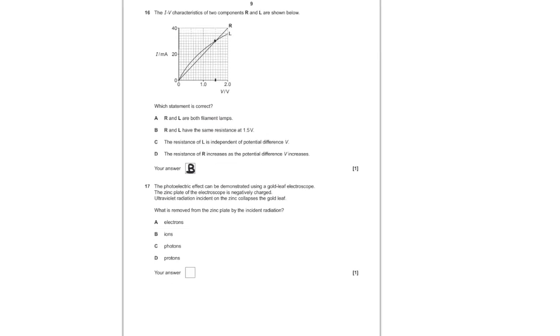For question number 17, the photoelectric effect can be demonstrated using a gold leaf electroscope. The zinc plate of the electroscope is negatively charged. Ultraviolet radiation incident on the zinc collapses the gold leaf. What is removed from the zinc plate by the incident radiation? Answer is A, as this is the photoelectric effect and when UV radiation is incident, the electrons are immediately removed from the zinc plate and that just leaves us with A as the answer.